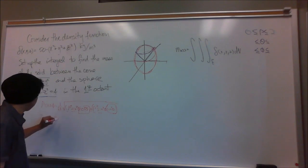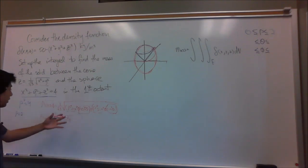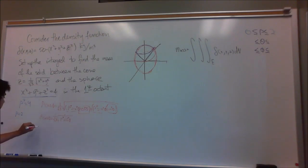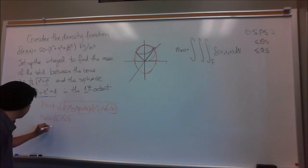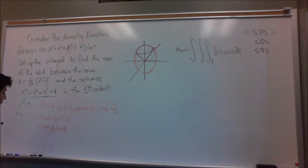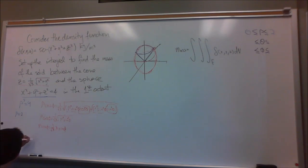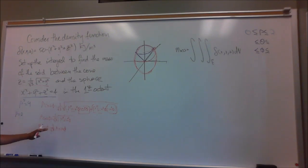So our equation is cosine phi equals 1 over the square root of 3 times rho sine phi. To solve for phi, we divide out the rho terms — they cancel to 1. Then we multiply both sides by the square root of 3, giving us root 3 times cosine phi equals sine phi.